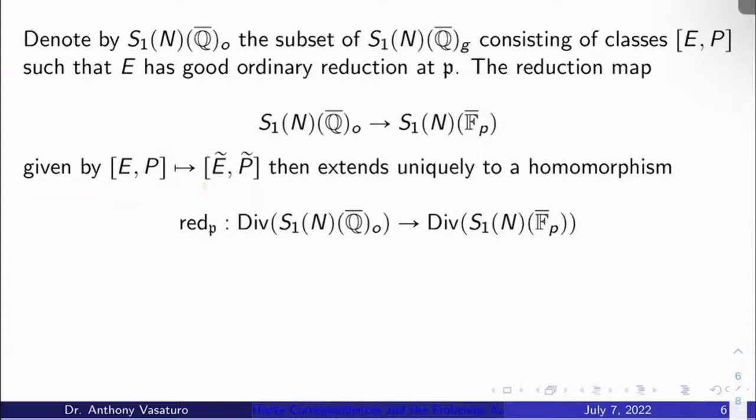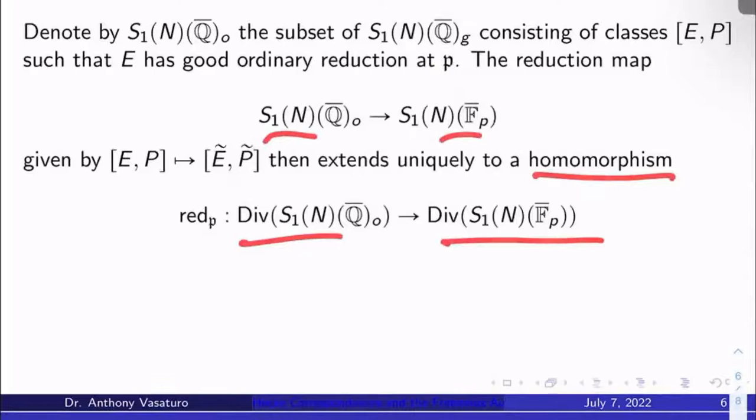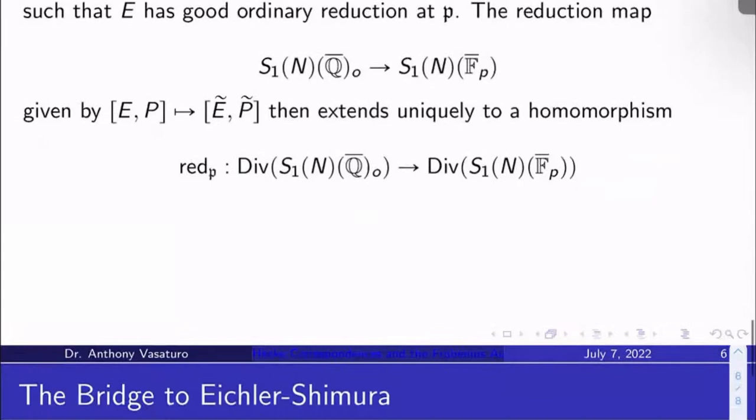This map here, this reduction map will obviously then extend uniquely to a homomorphism on divisor groups of these guys. We'll call that map red_℘, red for reduction. So you're just taking div of both sides. That's all that's going on here. So reduction extends to a map on divisor groups.